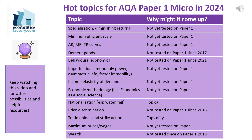Let's turn our minds to what might come up on Paper 1. Top of the list is probably costs — in the short run, diminishing returns, and in the long run, minimum efficient scale — which hasn't yet been tested on Paper 1. If they don't go on the cost side, they could go on the revenue side instead, looking at AR, MR, and TR curves and why they're different for price makers versus price takers.